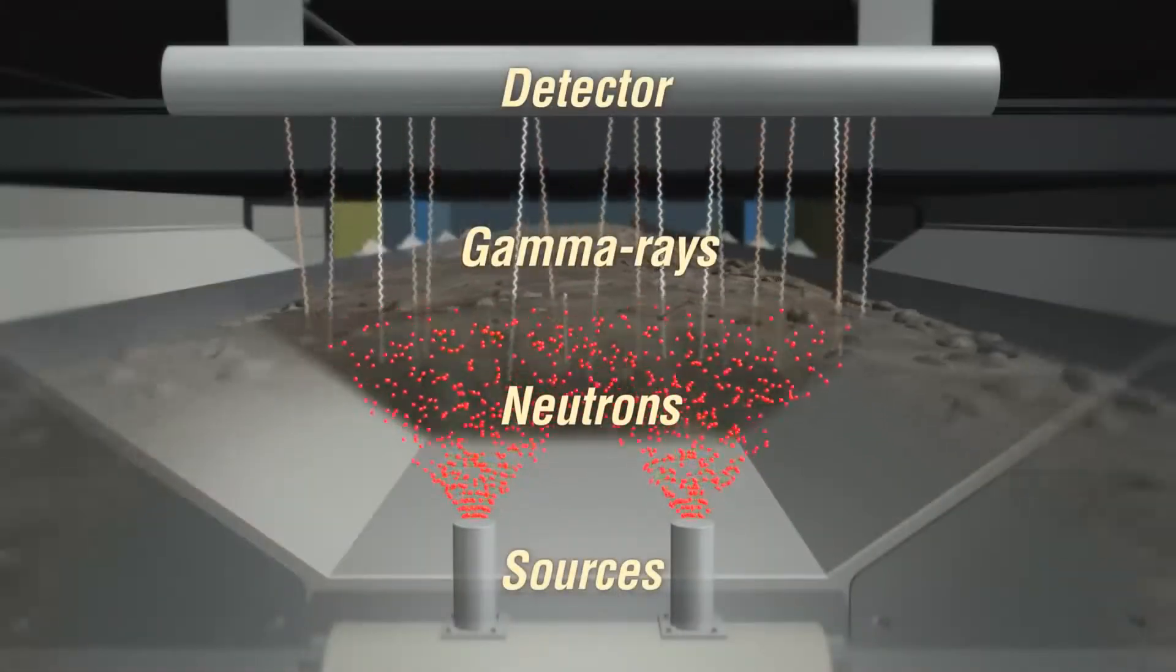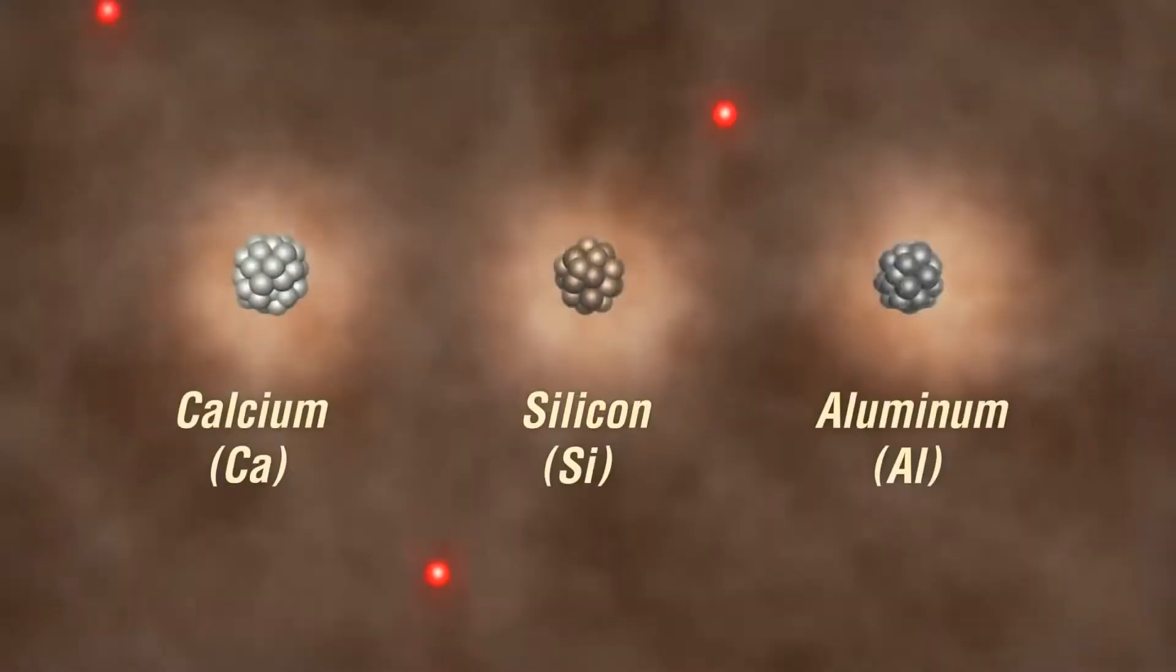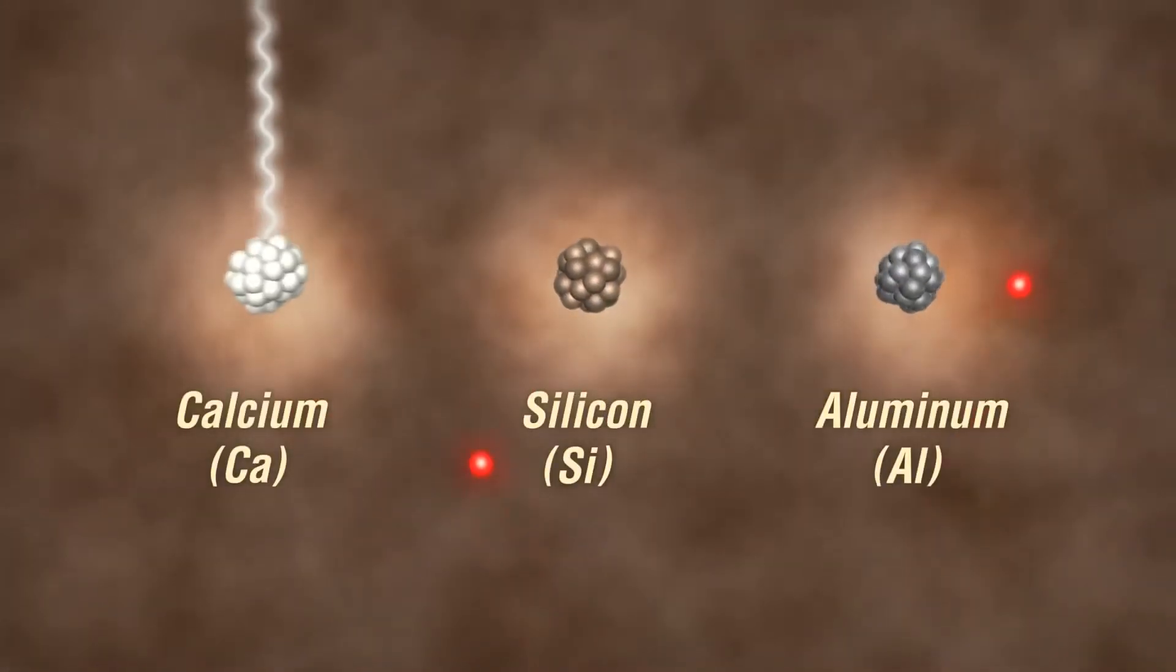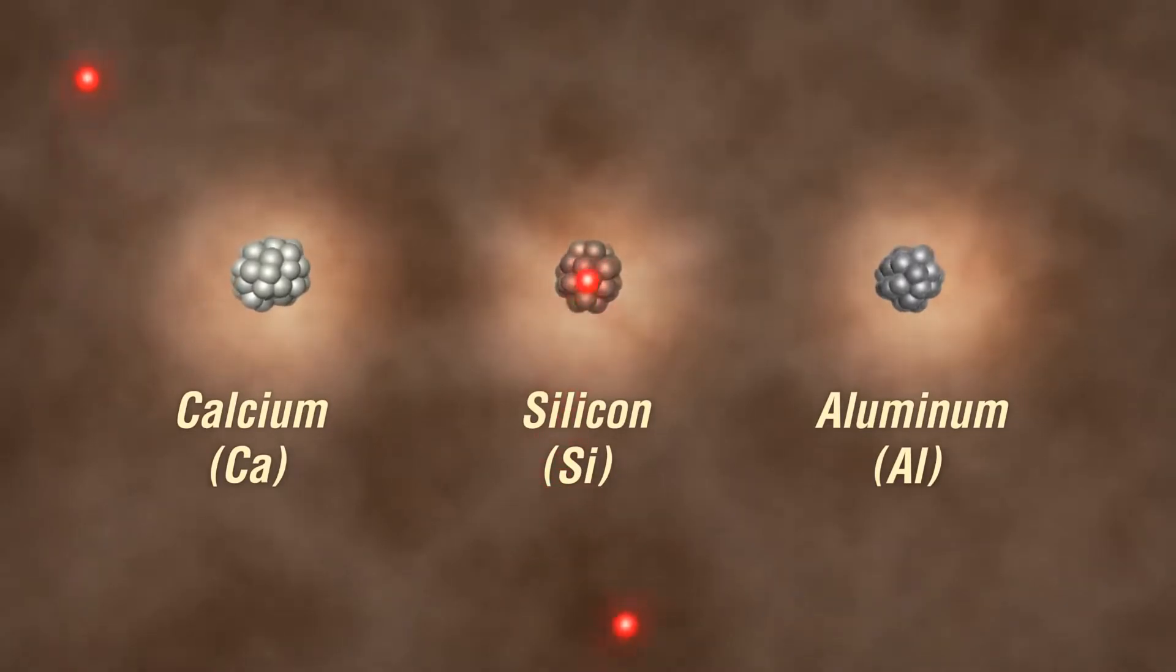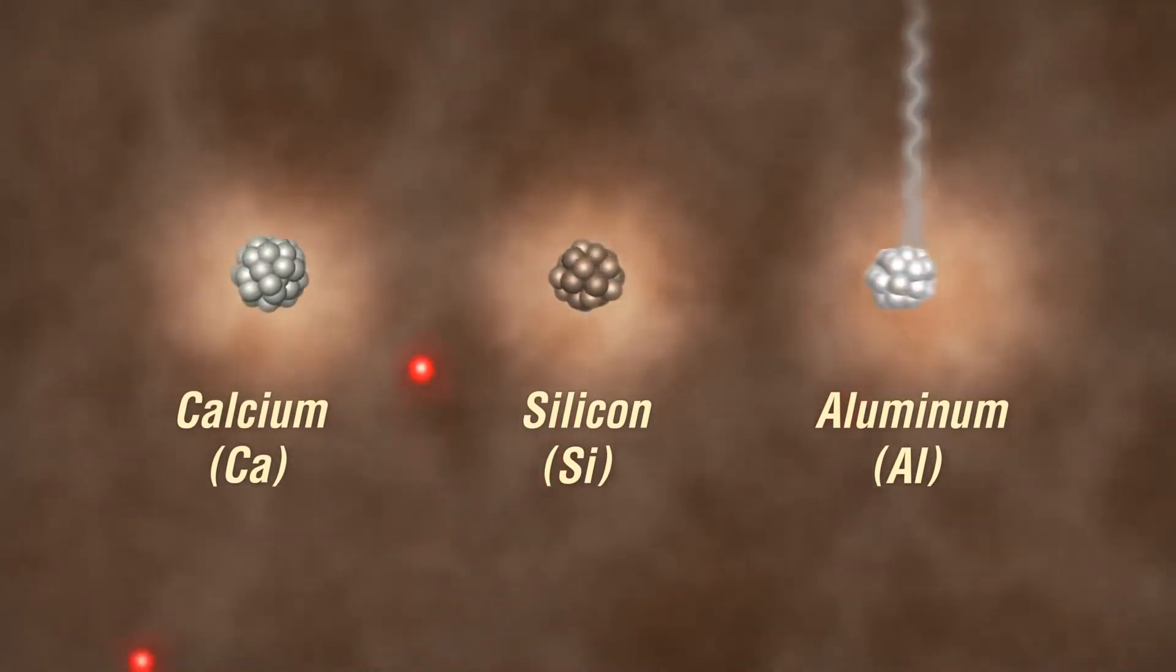generates gamma rays characteristic of the element from which they came. For example, calcium, silicon, and aluminum each have different and unique gamma ray energies associated with them and can be differentiated from each other.